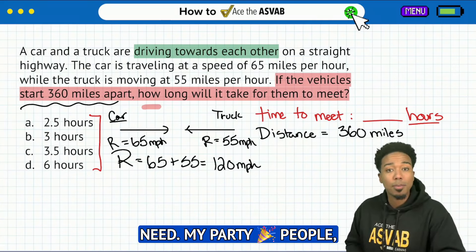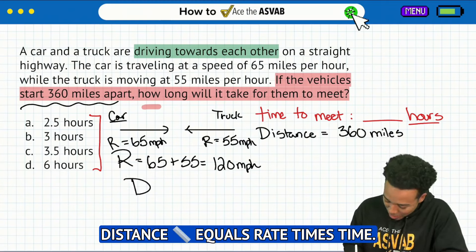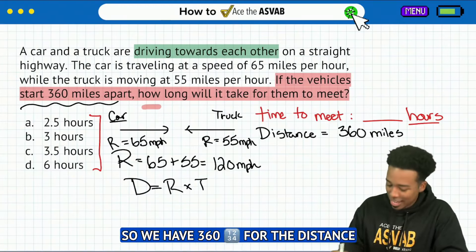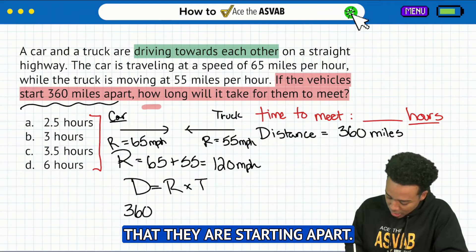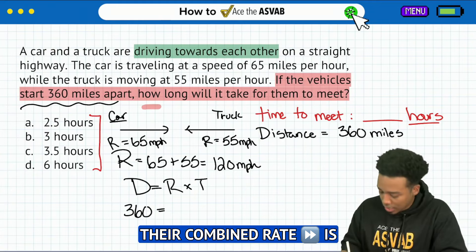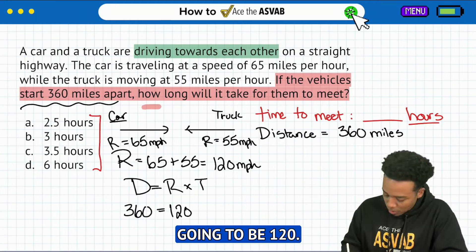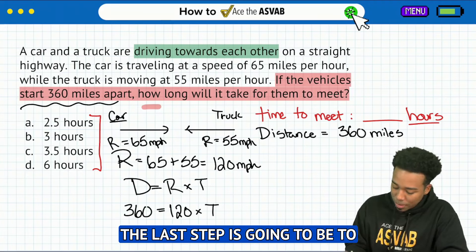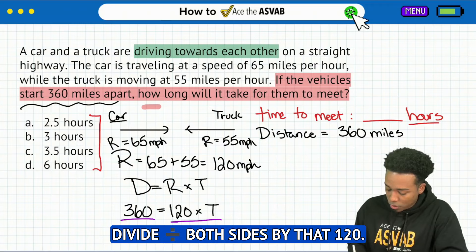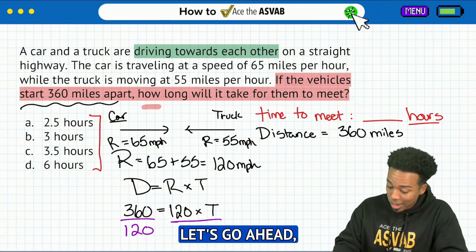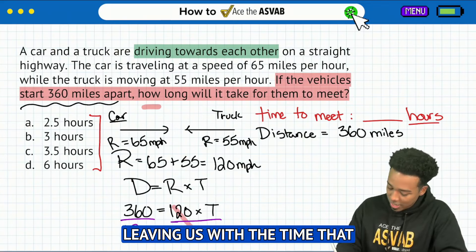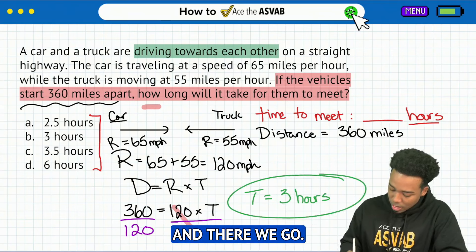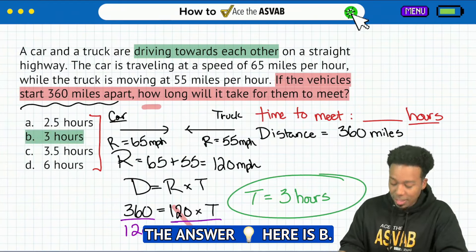So now we have everything we need. Distance equals rate times time — D equals R times T. We'll replace the information we have: 360 for the distance they start apart, and their combined rate is 120 miles per hour, multiplied by time, which is what we're looking for. The last step is to divide both sides by 120, which cancels out on the right side, leaving us with the time it'll take for these vehicles to meet being three hours. The answer here is B.